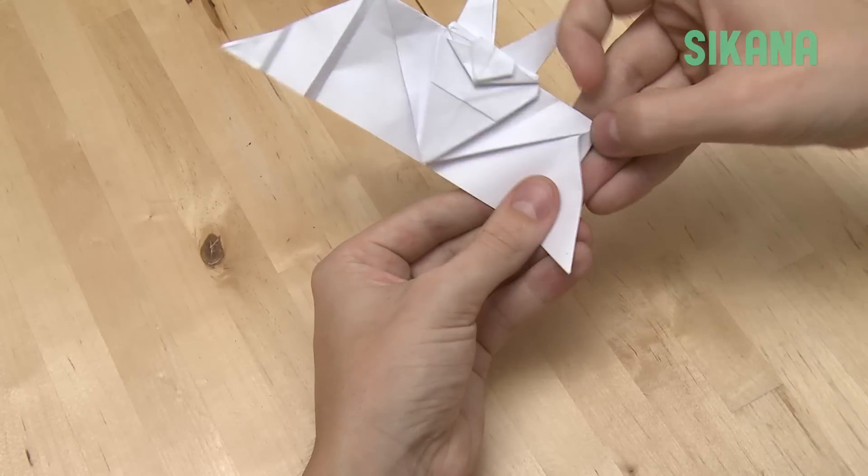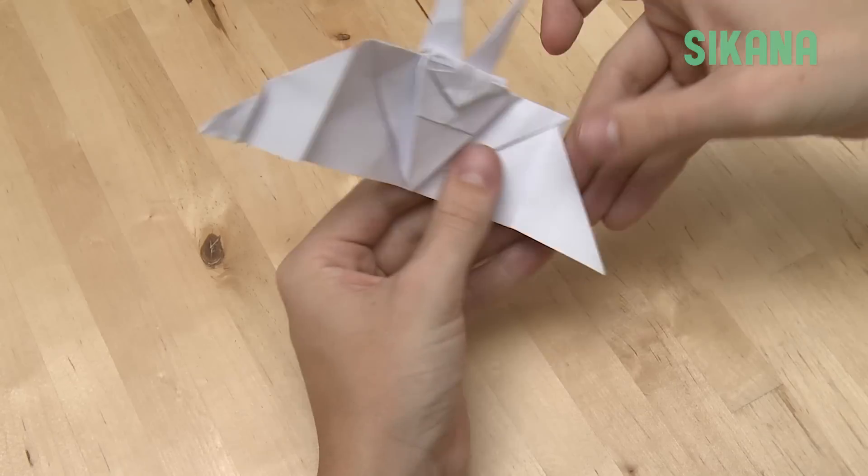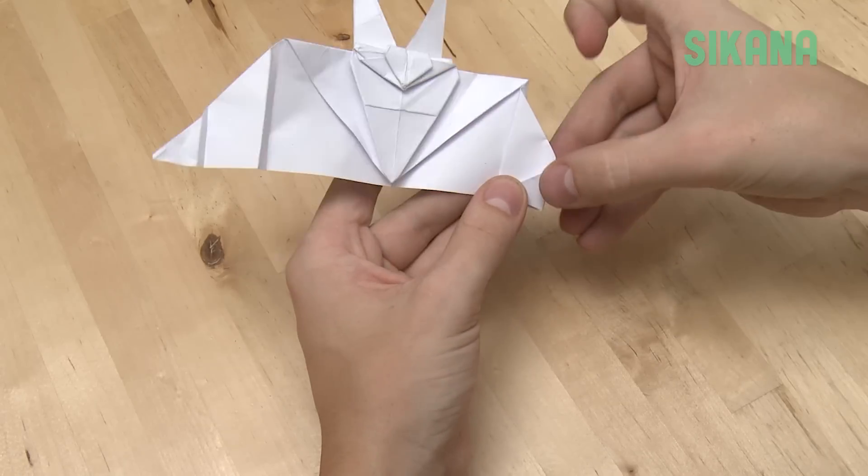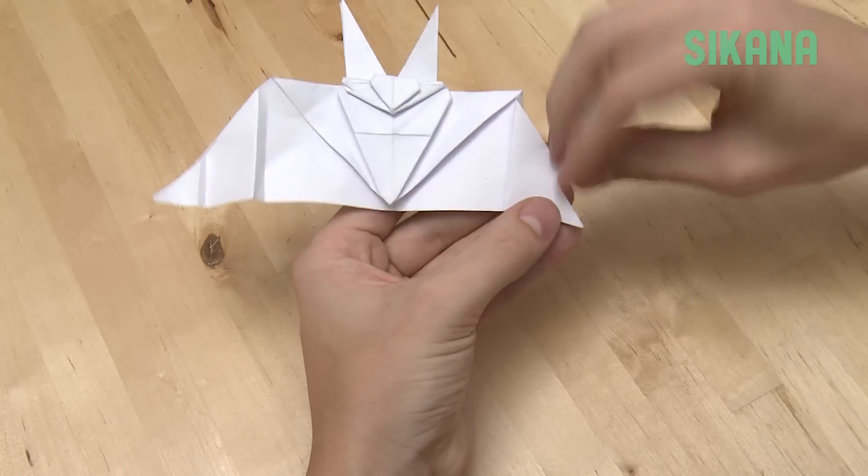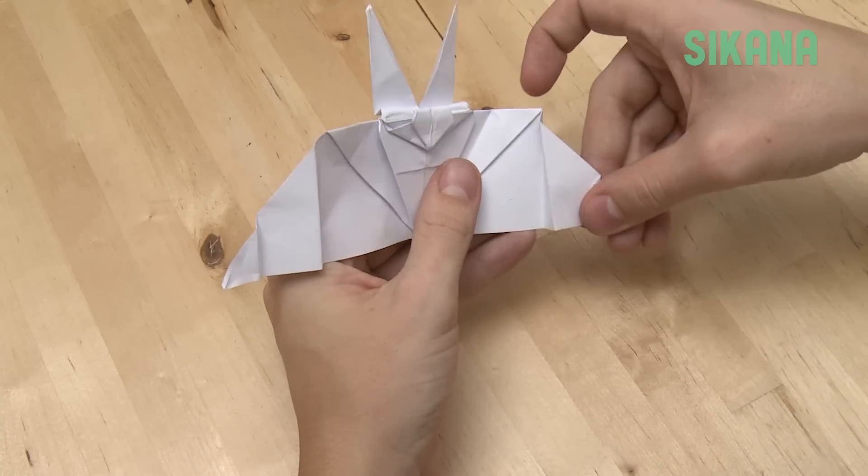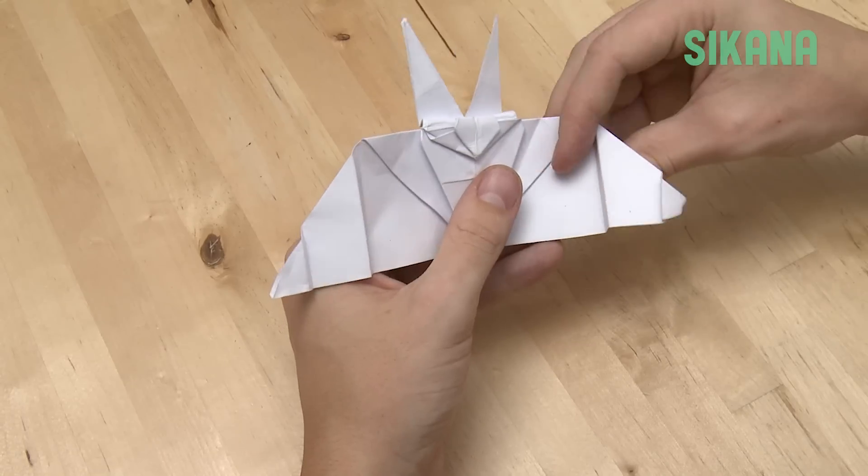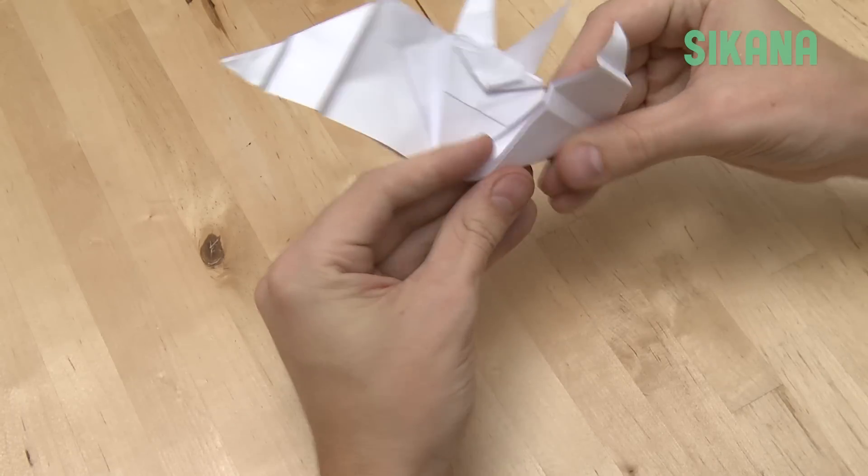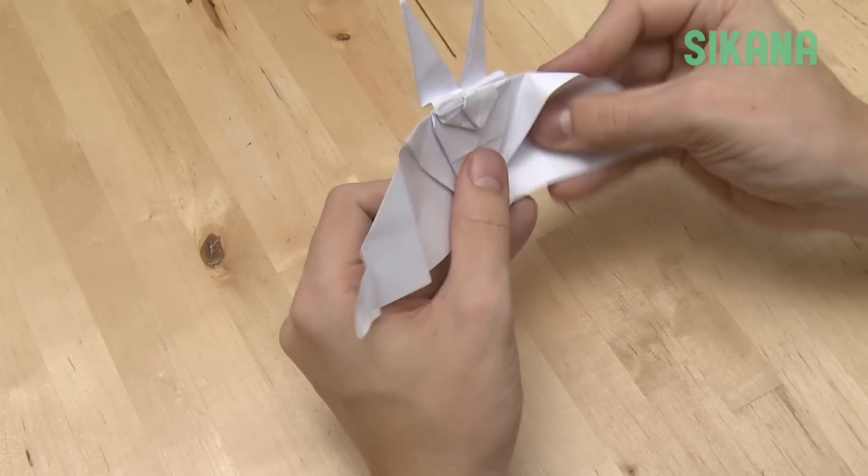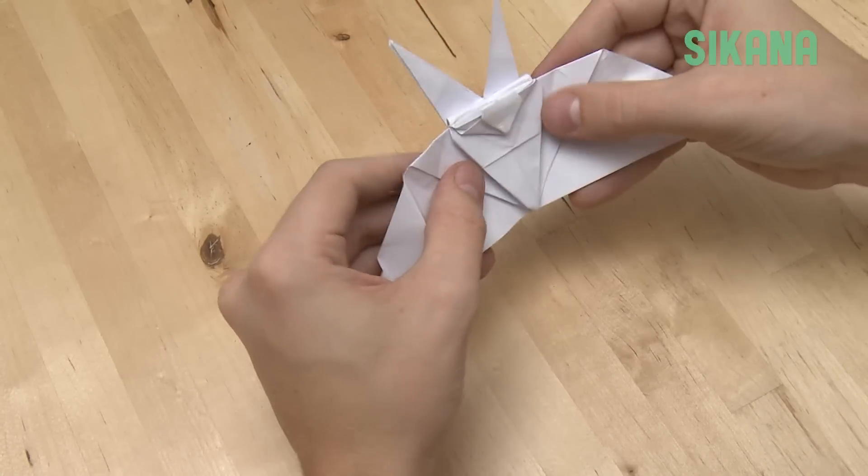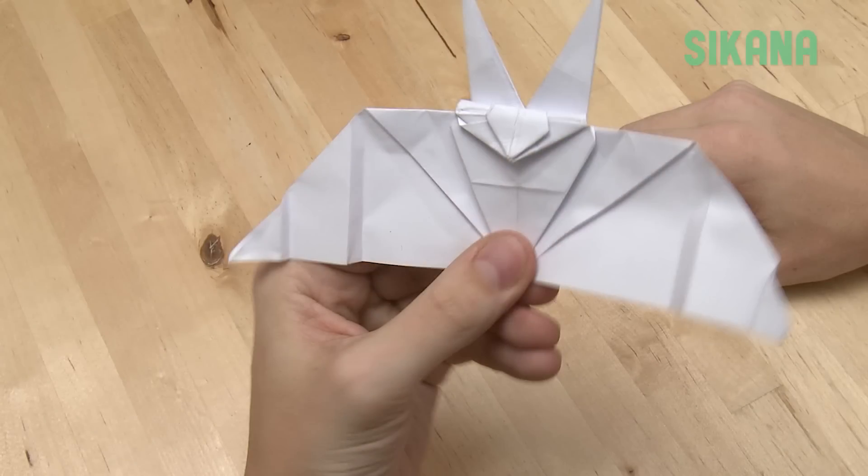Repeat for the other side. You have finished your bat origami.